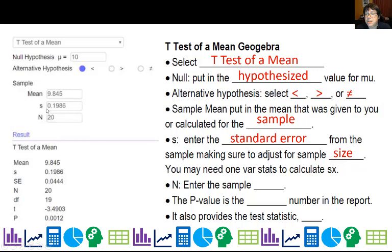Okay, and then you enter the sample size, and the p-value is this last number here. I'll highlight it. This is the p-value, right, and it's the last number in your report. And it also provides a test statistic, t.